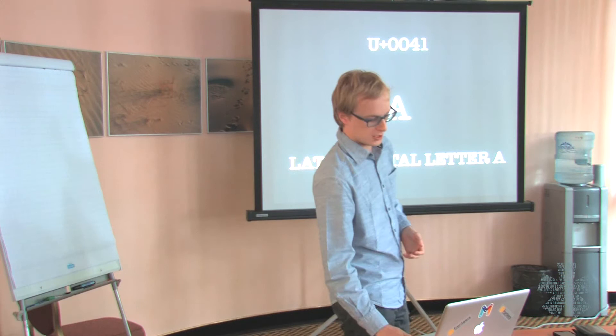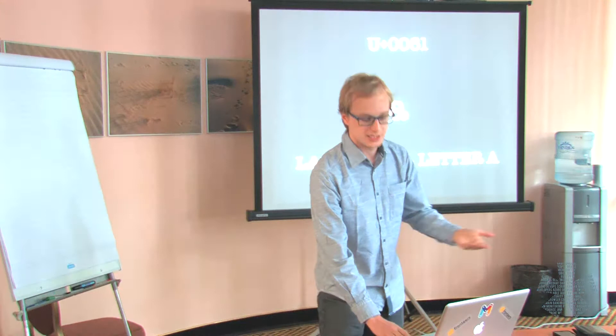Another example is the Latin small letter A. Of course, this is a completely different symbol, so it gets its own code point and its own unique name. I think you start to get the basic idea of Unicode now. Each symbol simply gets its own Unicode code point — it's as simple as that.